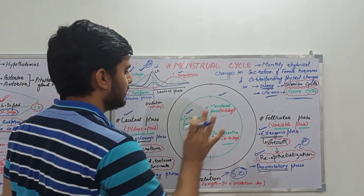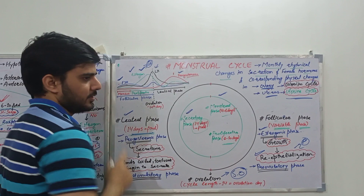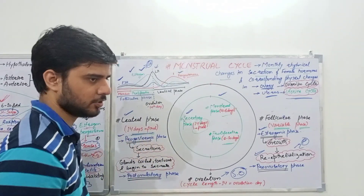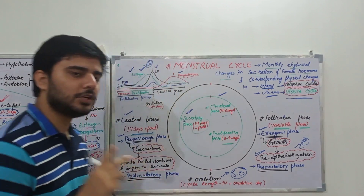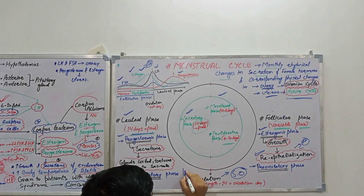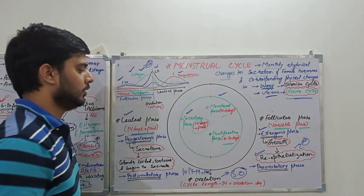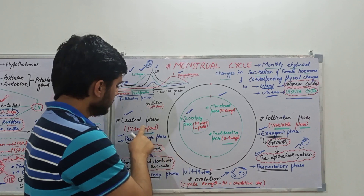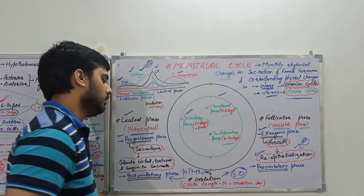Regarding the days: the luteal phase is fixed at 14 days because the involution of corpus luteum is fixed at 14 days — if pregnancy does not occur. To calculate the date of ovulation, we subtract 14 from the cycle length. For example, if the cycle length is 28 days, subtracting 14 gives day 14 as the date of ovulation. The follicular phase is variable because different follicles take different amounts of time to develop, but the death or involution of corpus luteum is always fixed at 14 days. Therefore the follicular phase is variable while the luteal phase is fixed.